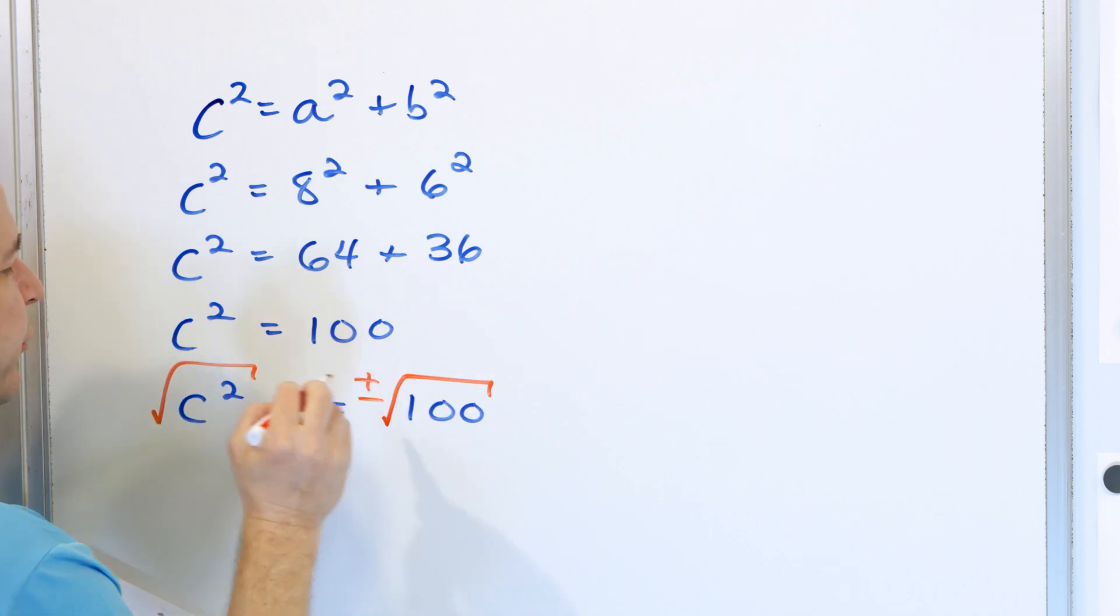And since we're applying our own square root, we put a plus or minus, cancel the root with the square. And then what we have is the square root of 100, which is 10. We're going to throw away the negative because we don't have negative distances. So 10 kilometers.